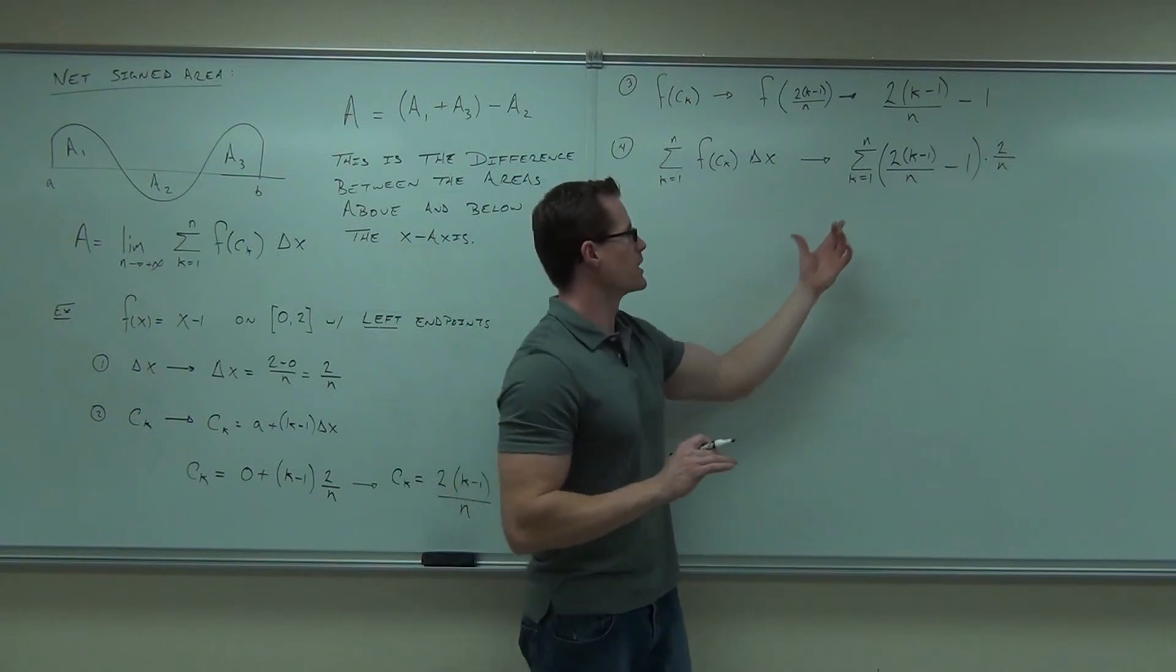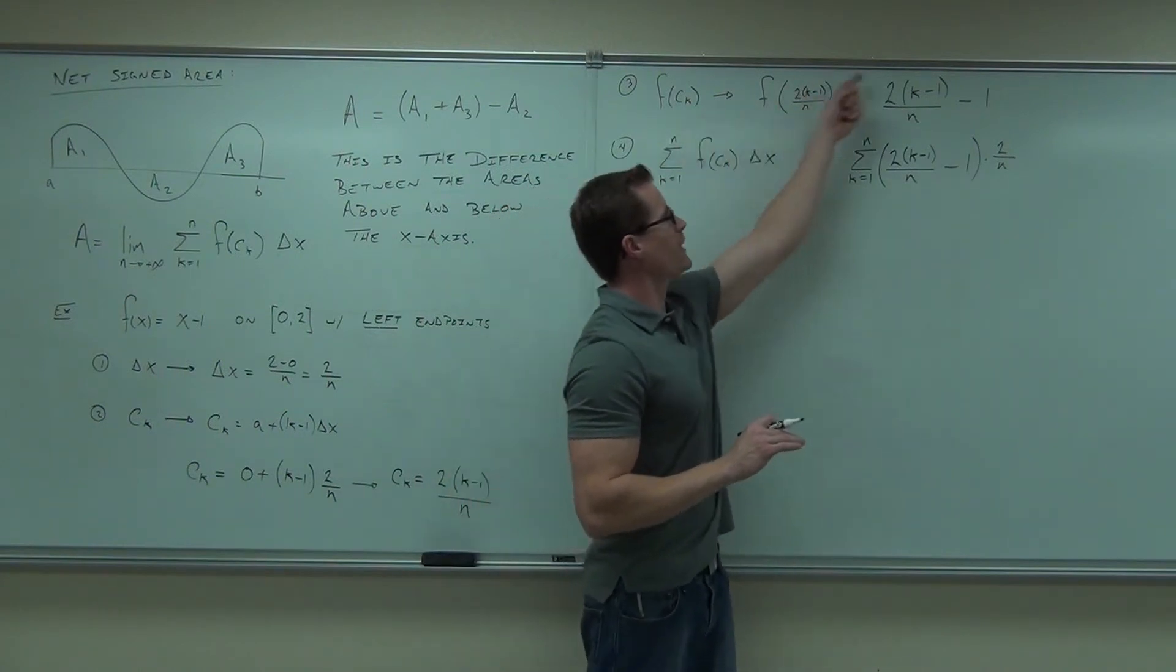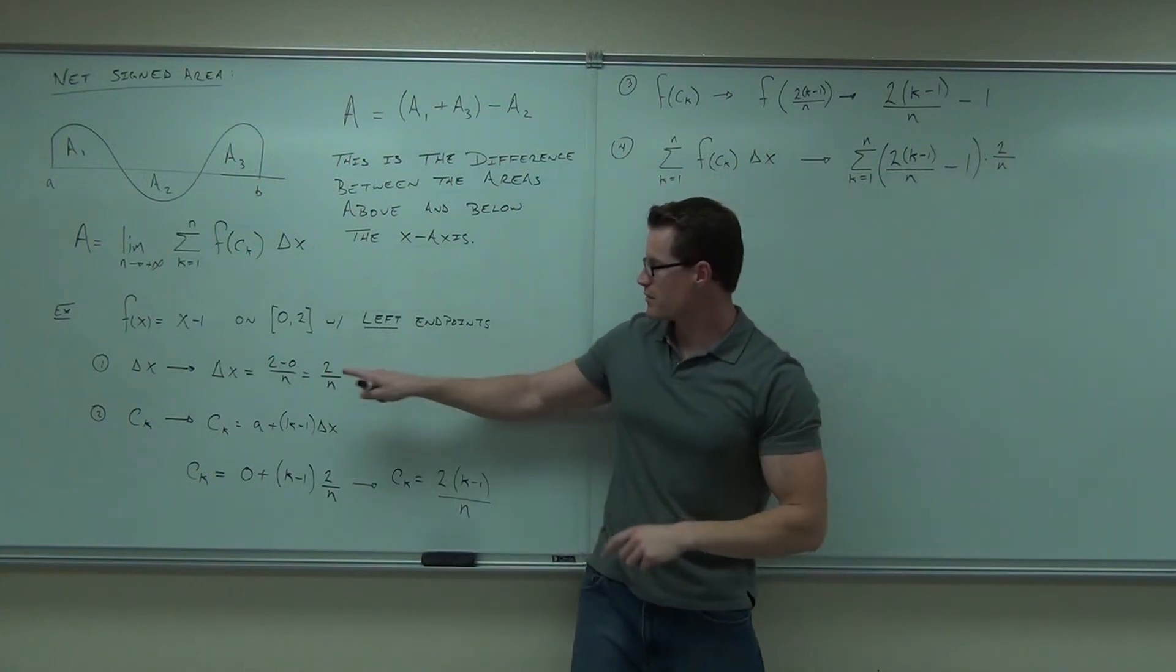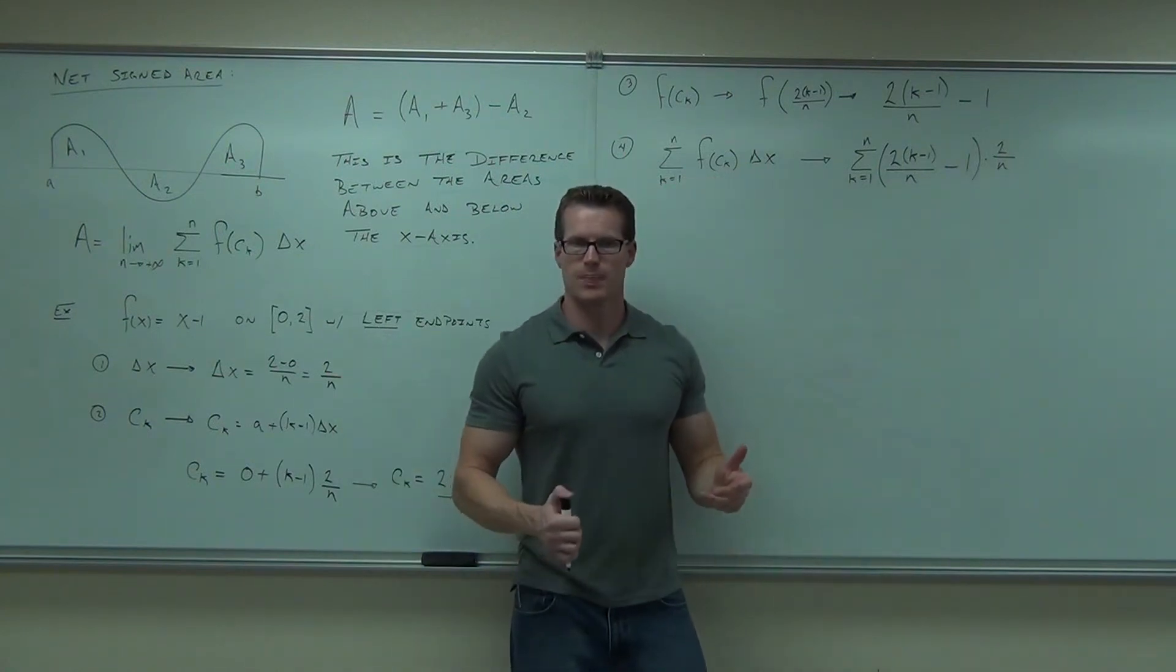Got it? Then we plug everything in, we got our function of c sub k, oh, that's here, times our delta x, we got our delta x from right there, and now we're good to go. What now?